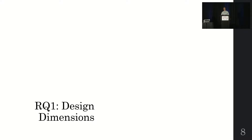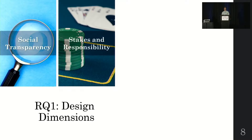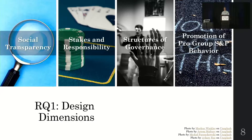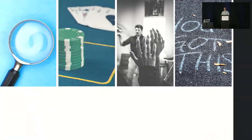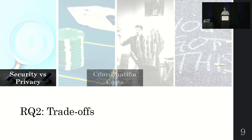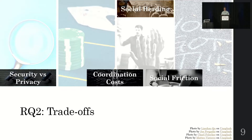We performed a thematic analysis to reveal design dimensions and the trade-offs related to those. The design dimensions we identified are: social transparency, stakes and responsibility, structures of governance, and promotion of pro-group SMP behaviors. Trade-offs include security versus privacy, coordination costs, social hurting, and social friction.